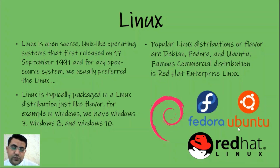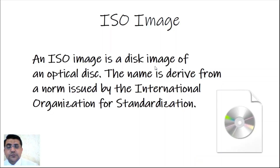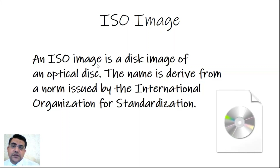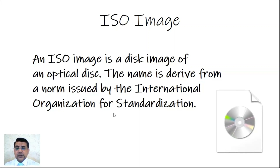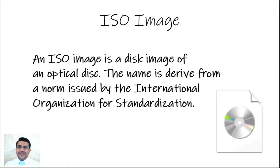Ubuntu — the correct pronunciation is actually 'Ubuntu', not 'Ubuntu'. Red Hat Linux is also shown. When you go to download Linux or want to work with it, it comes as an ISO image disk. ISO is a disk image for optical disk, and the name is derived from the norm set by the International Organization for Standardization, like a zip file.